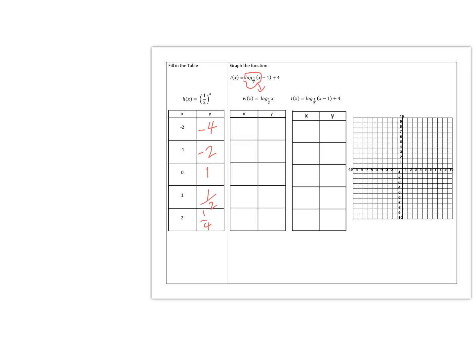We know we're going to flip the x and y values. We can also think about it this way: if we plug in 1 for x, we're really asking, 'one half to what power equals 1?' Remember, log solves for the exponent. One half to the 0 power equals 1. So let's switch all the x's and y's: the x values from the first function become y values here, and the y values become the x values.